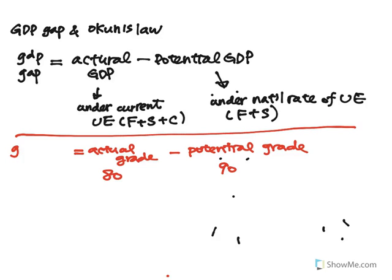So let's say your actual grade is 80. Then you have a grade gap and the gap is negative 10. So it tells you, hey, when you could have studied, you were not studying.